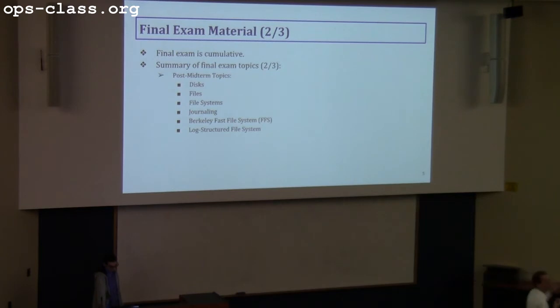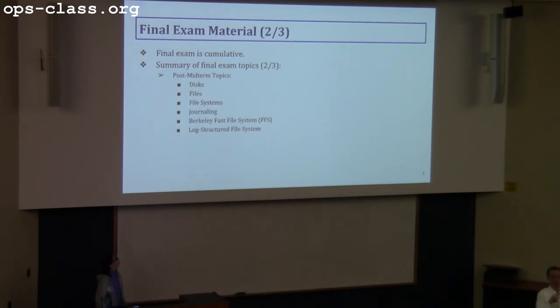To be clear: journaling refers to the safety of the file system in the case of a power cut or other types of corruption — that's a type of logging, but distinct from the log-structured file system concept.